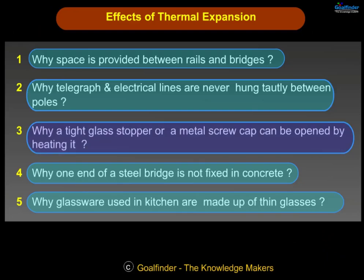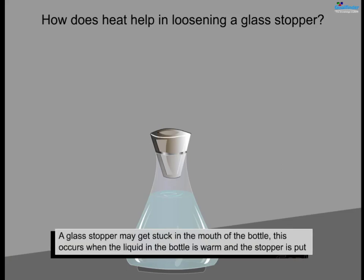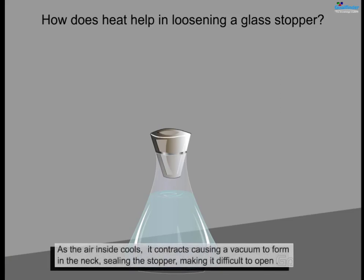Why can a tight glass stopper or a metal screw cap be opened by heating it? A glass stopper may get stuck in the mouth of a bottle. This occurs when the liquid in the bottle is warm and the stopper is put in place. As the air inside cools, it contracts, causing a vacuum to form in the neck, sealing the stopper and making it difficult to open.